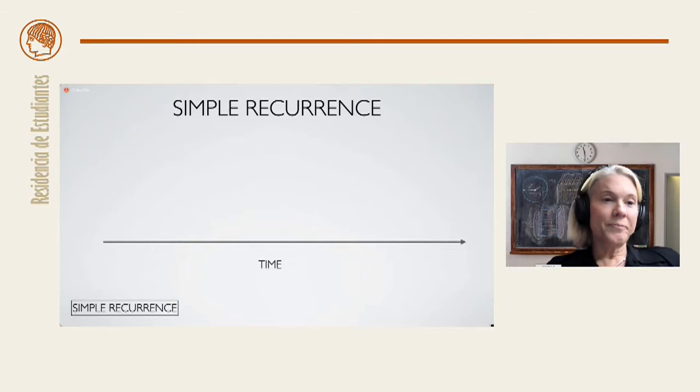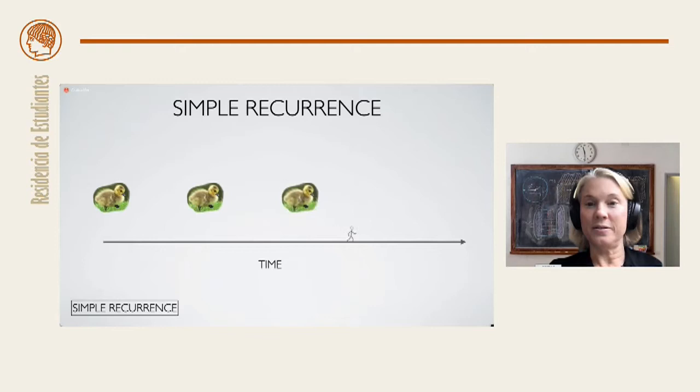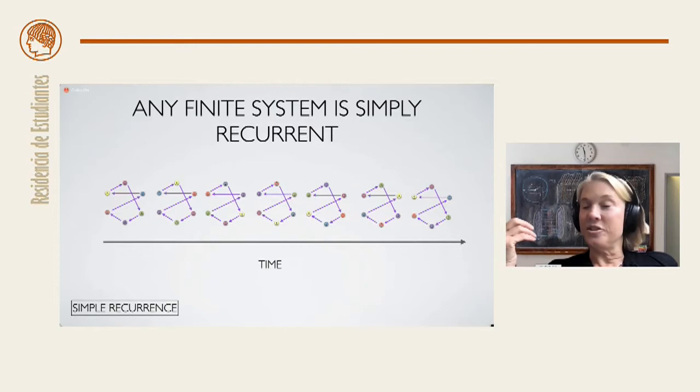So simple recurrence first. In simple recurrence, recurrence occurs at regular predictable intervals in time. And every initial beginning state recurs at the same time. Any dynamical system that has only finitely many states, such as our example from the beginning, is simply recurrent. The only requirement is that two different states don't go to the same state. So as in this example that we looked at earlier. The reason for this is a mathematical fact called the pigeonhole principle. So imagine there are only finitely many ways that you can arrange these colored dots. Eventually, no matter what the rules, you'll have to start out where you begin.